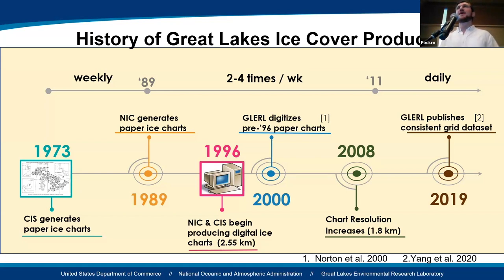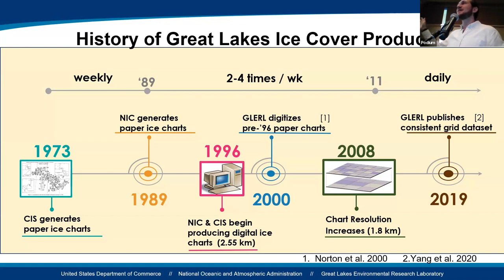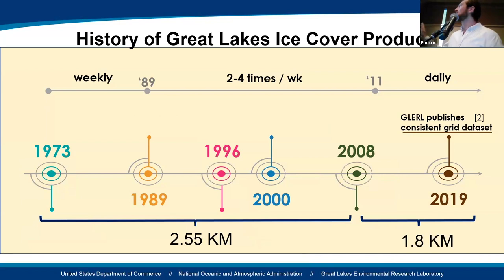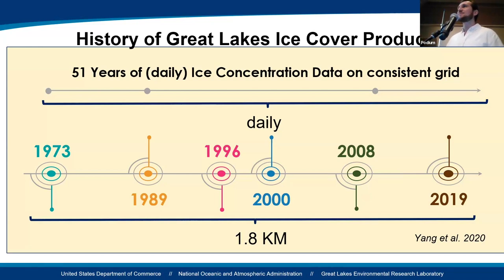In 2008, with better technology and more disk space, the chart resolution increased from 2.5 to 1.8 kilometers — basically double resolution. The temporal frequency also changed: in the '70s and '80s, ice cover was observed basically once per week, then two to four times per week, and eventually daily after 2011. So we had a great data set, but on two different grids and not necessarily consistent in temporal frequency. In 2019, published in 2020, we standardized the data set — being very meticulous about the resampling, avoiding interpolation to preserve lake-wide and sub-region averages. As a result, the data is now all available on a 1.8-kilometer grid and daily.